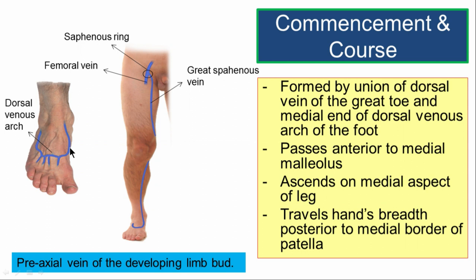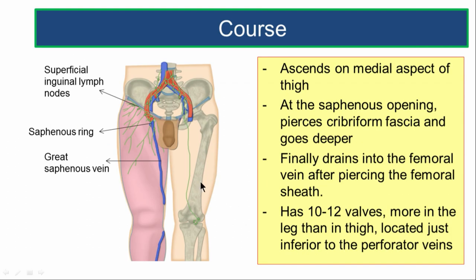Once formed, the great saphenous vein passes upwards, going anterior to the medial malleolus — about 2.5 cm anterior to it. It ascends on the medial aspect of the leg, about one finger's breadth posterior to the medial border of the tibia, then goes posterior to the knee joint, about a hand's breadth posterior to the medial border of the patella. It further ascends on the medial aspect of the thigh and reaches the saphenous opening — a round opening in the fascia lata lying about 2 cm below and lateral to the pubic tubercle.